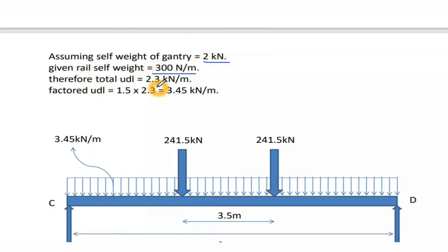The total factored UDL on the gantry girder is 3.45 kN/m (combining crane self-weight UDL of 18.75 × 2 / 16 and rail weight).